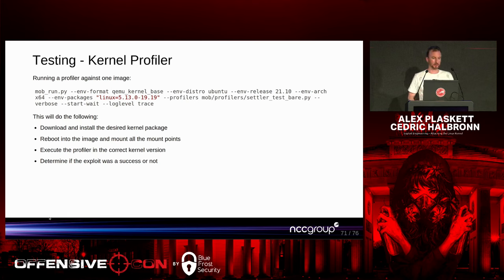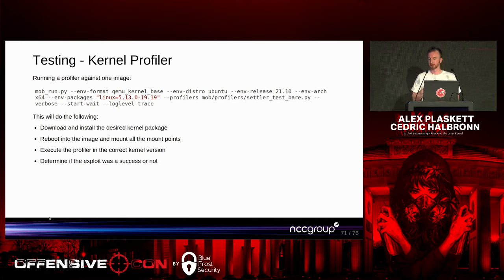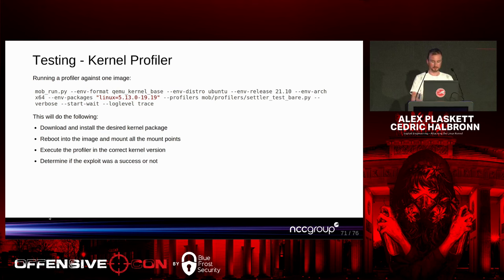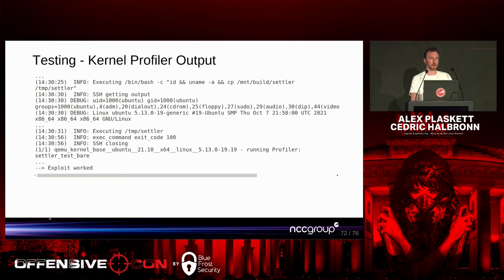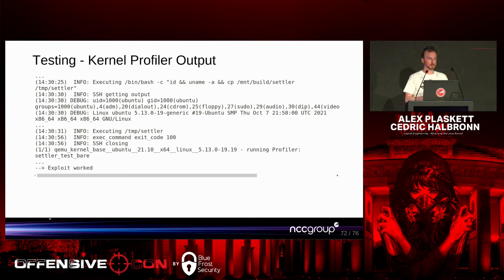Here's a demonstration of the exploit profiler running against a 5.13.0-19.19 environment. It downloads the desired kernel, reboots into the image, copies the exploit up, executes the exploit, gathers results, and determines if it's successful — showing id first as a low-privilege user, executing our exploit called 'settler,' and getting a return code of 100 meaning exploit successful. We can then scale this up across lots of different target environments.